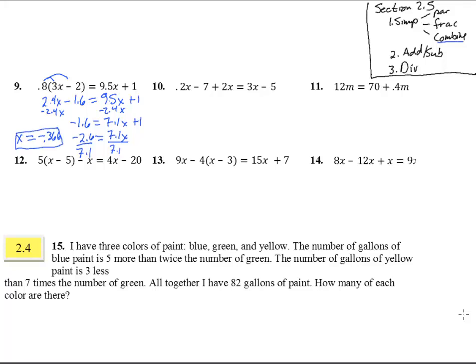Number 10. Here we have .2x minus 7 plus 2x equals 3x minus 5. Now we don't have any parentheses or fractions. So we can just start combining. Now these two are on the same side so we just put them together. So that's 2.2x minus 7 equals 3x minus 5. Now we just add them together. It's just combining like terms. There's nothing special about that. But when we try to get this x and that x together, that's when we have to subtract something from both sides of the equals sign.